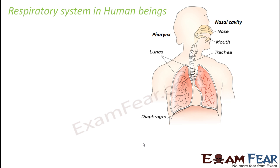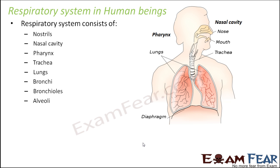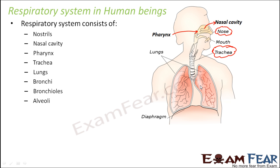The various organs that together form the respiratory system are: nostrils, which is also called the nose; nasal cavity — the space just inside the nostrils; pharynx, the passage from the nasal cavity; and trachea, a tube-like structure that the pharynx leads into. This trachea further connects to the lungs, with one right lung and one left lung present on either side.